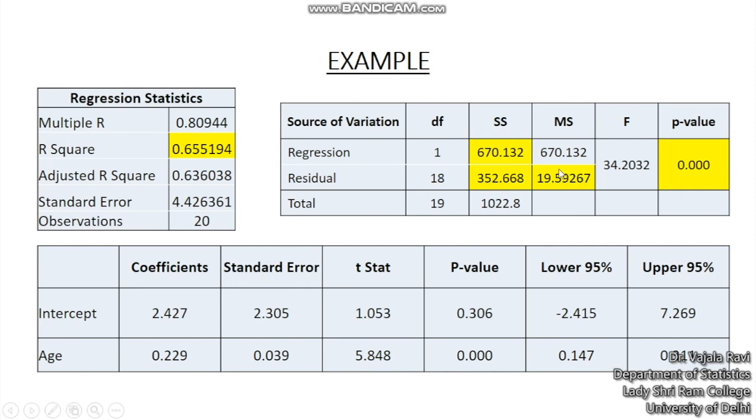Now another thing to note in this ANOVA table is this mean squares due to residual, the 19.592. Note that this is nothing but an unbiased estimator of your error variance. If you remember the formula sigma cap square which was summation ei square upon n minus 2, so if you do not want to remember those formulae then this 19.592 is nothing but an estimator of your variance.